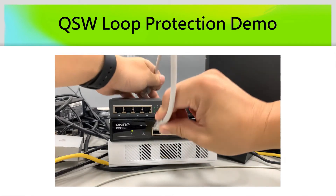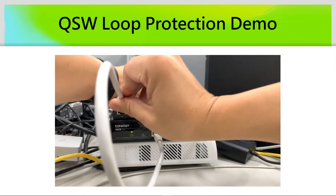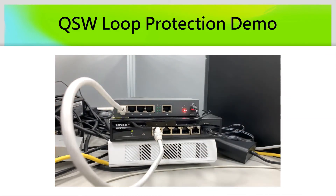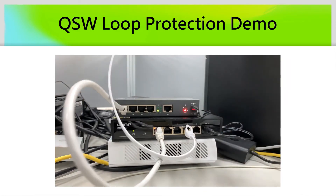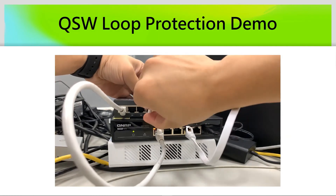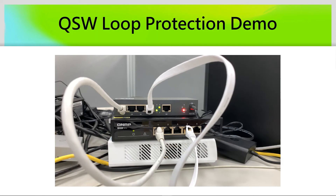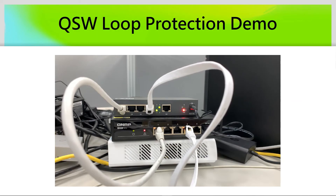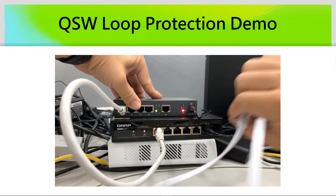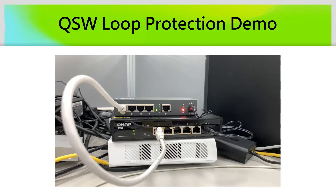Let's see how loop protection works on the QSW switch. First, we connect two switches, and you can see the connection come up — that's a normal situation. To simulate a loop, we connect another cable between the two switches. When the second connection comes up, the loop indicator lights up because the QNAP switch has already detected the loop, and the loop port also starts flashing at the same time. These two ports are then shut down automatically to stop the loop. When we remove one cable to correct the network connection, the remaining port recovers automatically as well.